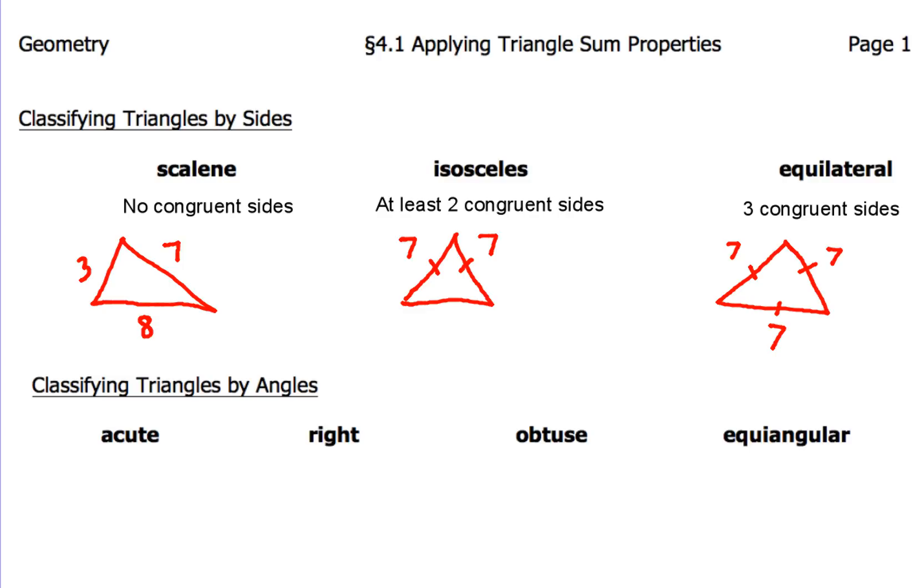Alright, so now let's take a look at the ways that classify triangles by their angles. We've got acute, right, obtuse, and equiangular. Now our acute triangle is three acute angles, and acute, remember, means that they are all less than 90.